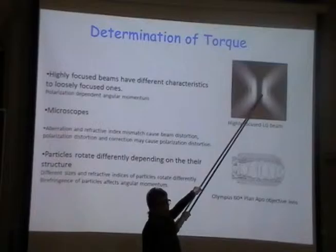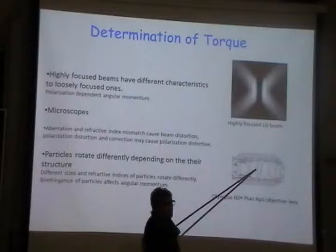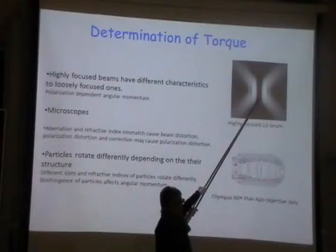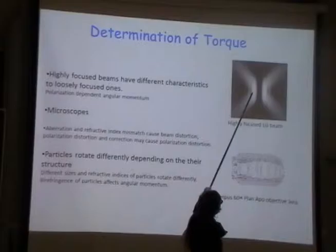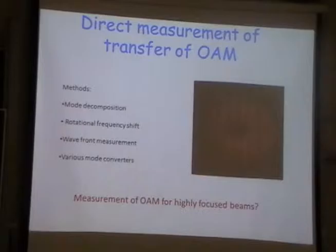What is shown here is that I take a Gauss-Laguerre beam and focus it through a 100× objective with high numerical aperture. The modelling shows a very elongated part of the beam along the z-axis — quite a distorted beam. The question is: can I define what sort of orbital momentum transfer I will have in a situation like that?